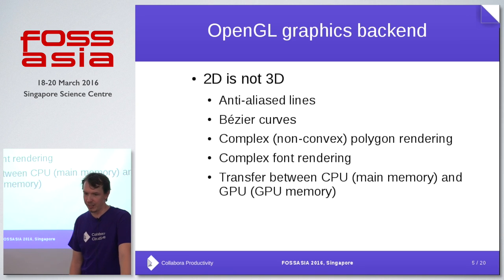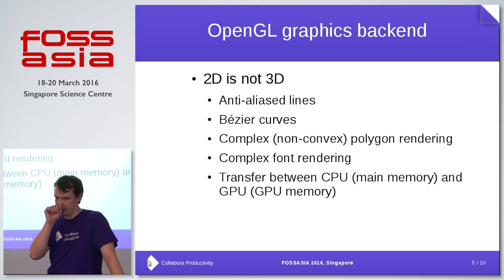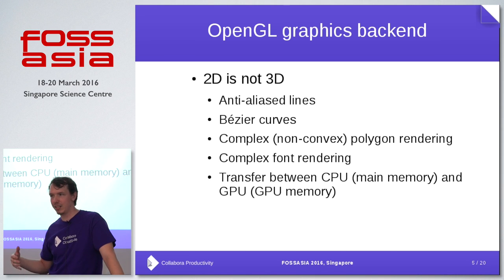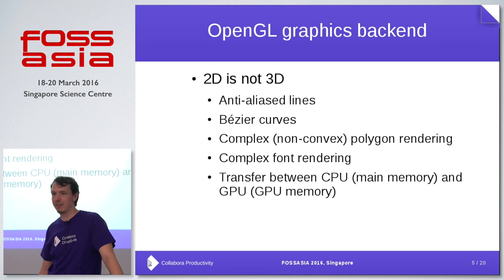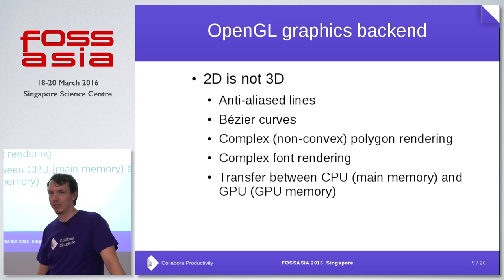Another issue is that it's 2D, not 3D. In 2D you have things like anti-aliased lines, and most things are anti-aliased — but sometimes also not. OpenGL allows you to do anti-aliasing, but if you choose this, then you have to anti-alias everything. First, this is a performance problem. Second, you don't want to do it always.